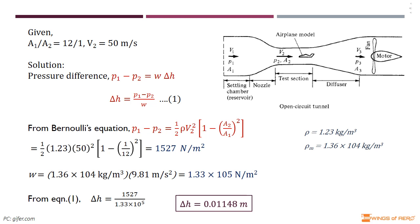Then we can write the pressure difference p₁ minus p₂ equals w times Δh, where w is the weight per unit volume of the manometer fluid and Δh is the height difference. From this we can find Δh, but all values are unknown so far.